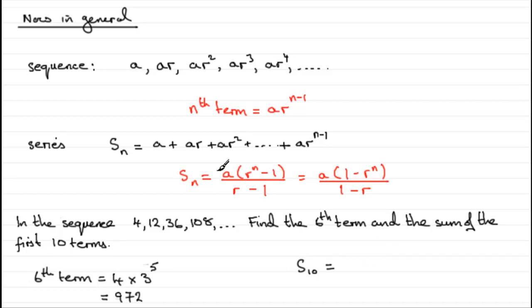So, for S10, it will be A, which is the 4, times the common ratio 3 to the power n, 3 to the power 10 in this case, take 1, and then it's divided by R minus 1, 3 take away 1. Work that out in your calculator and what you should find you get is that it comes to 118,096.